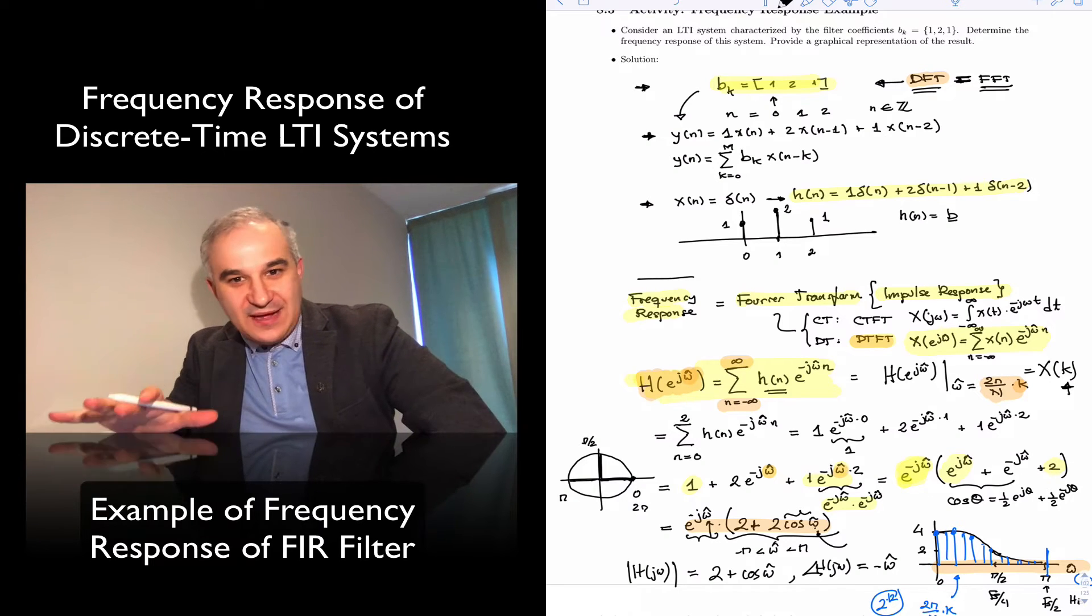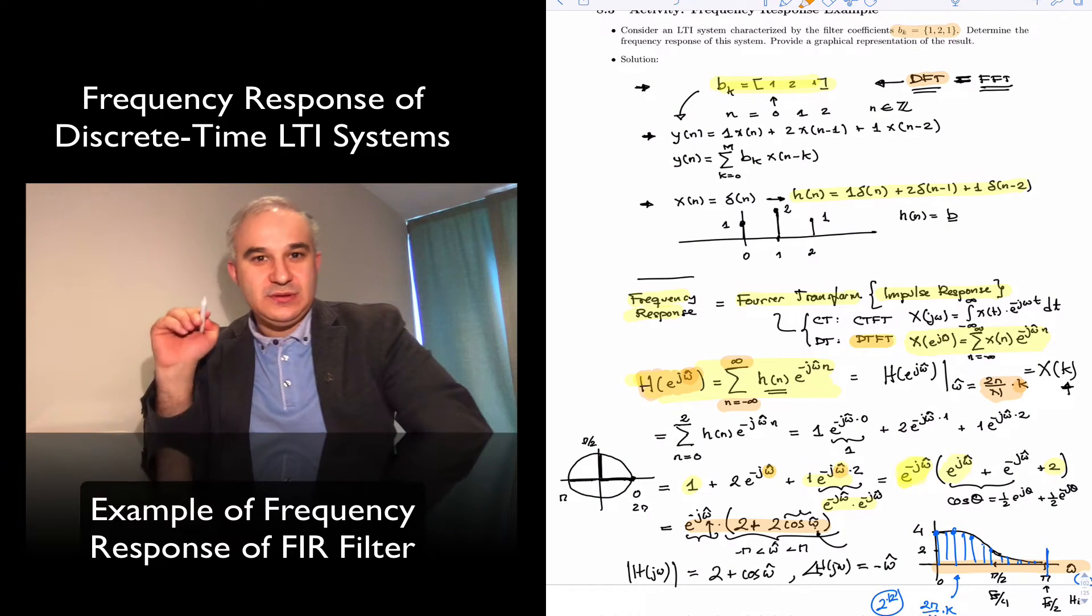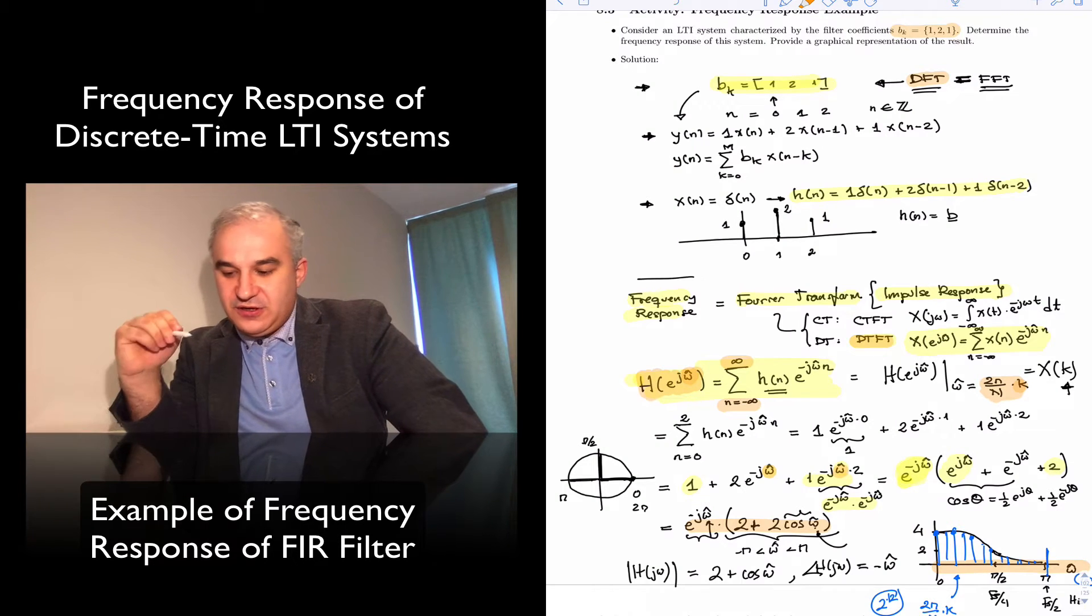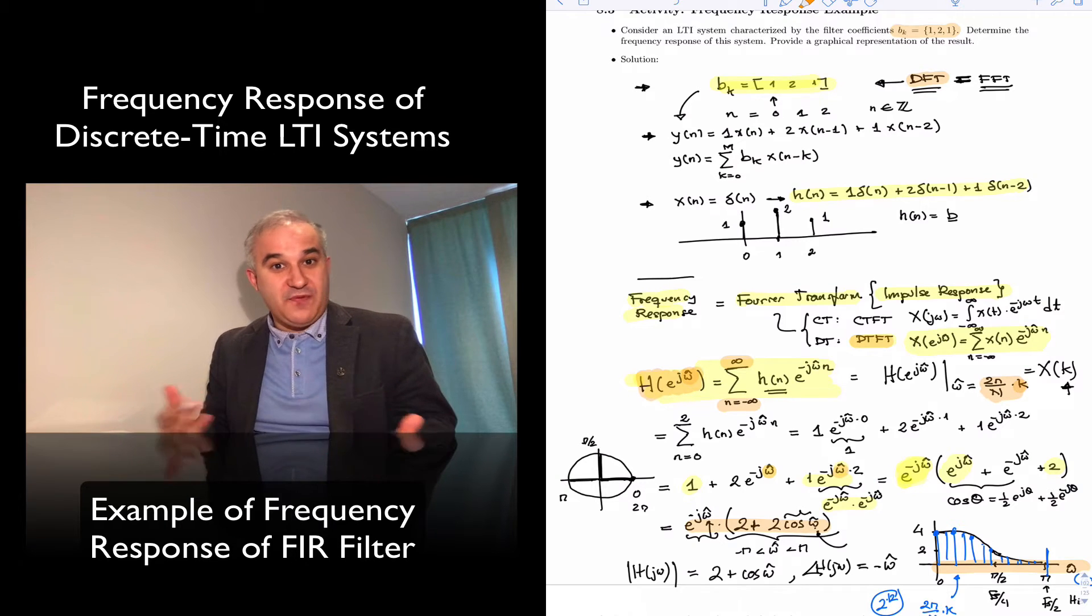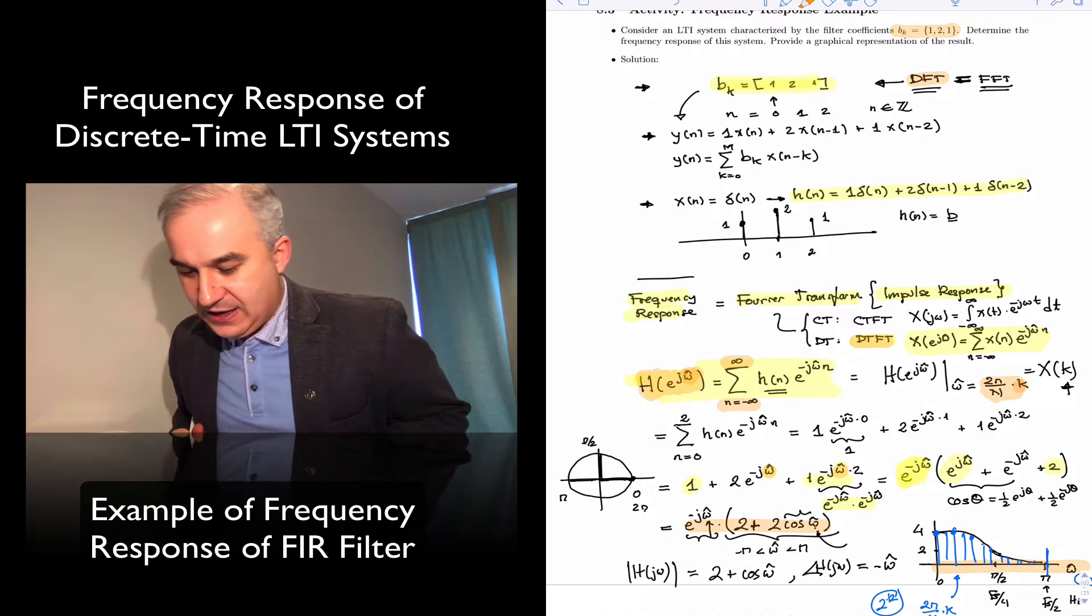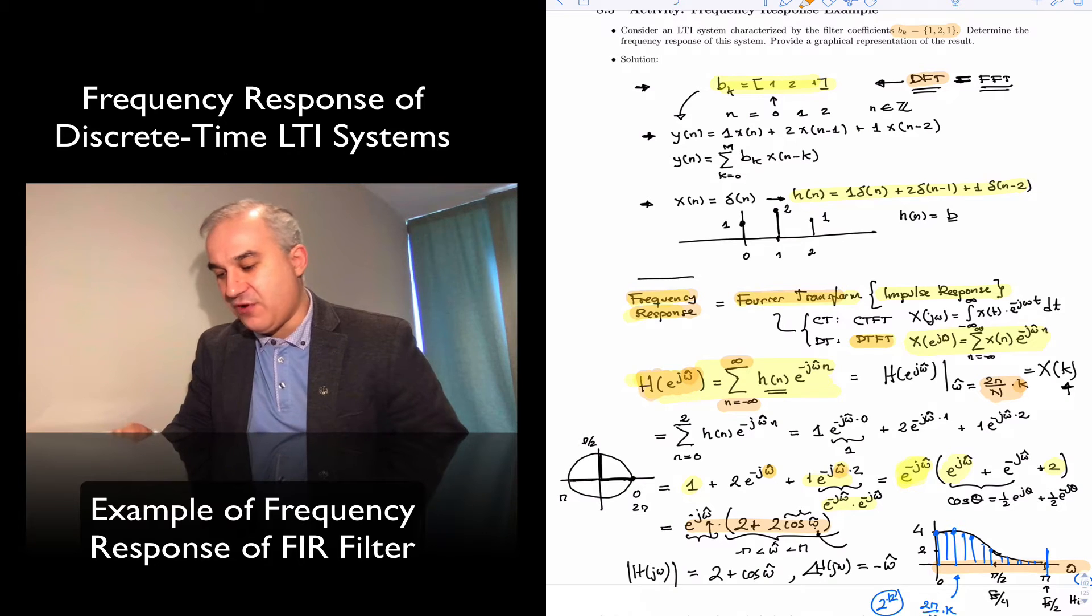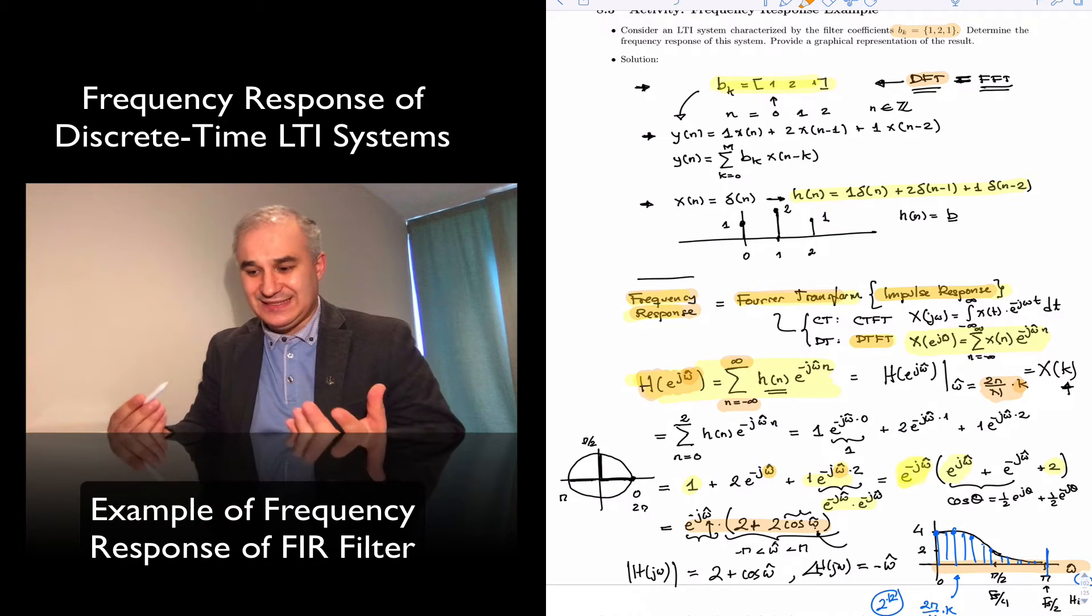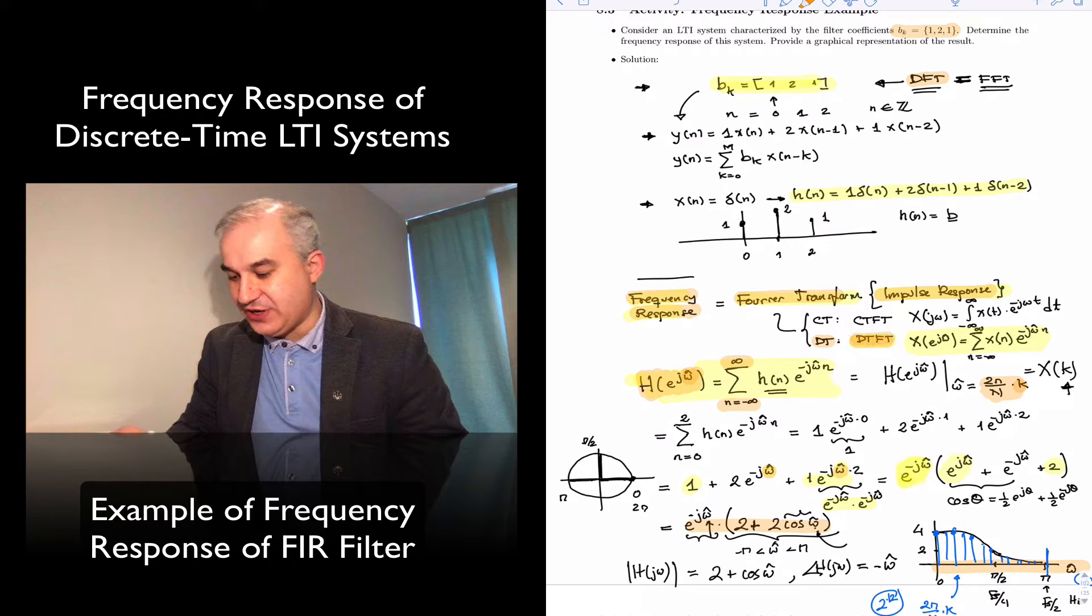Hello. So we just completed an example where, given a set of filter coefficients, in this case an FIR filter, we wanted to analytically find the frequency response. What type of filter is this? And so we went over the fact that the frequency response is the Fourier transform of the impulse response. Since this is a discrete time system, we use the discrete time Fourier transform.